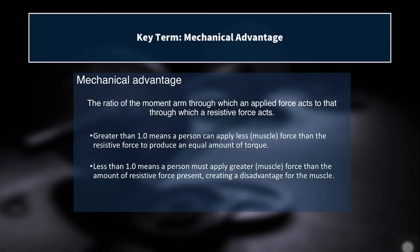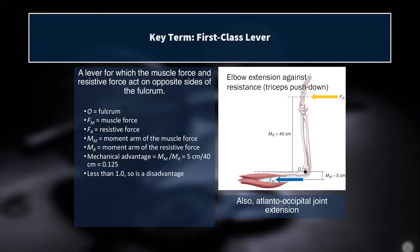Mechanical advantage is the ratio of the moment arm through which an applied force acts to that through which a resistive force acts — applied force moment arm over resistive force moment arm. If this number is greater than one, meaning the applied force moment arm is greater than the resistive force moment arm, then your muscle is at a mechanical advantage — the muscle can apply less force than the resistance. If the applied force moment arm is smaller, the muscle is operating at a disadvantage and must produce more force than the resistance on the other end of the lever.